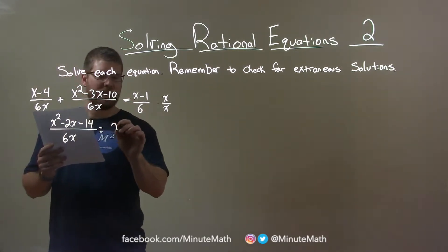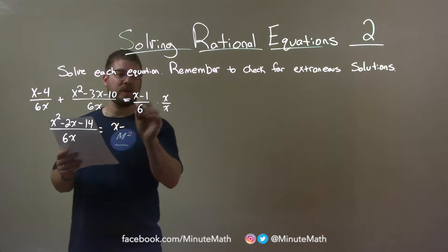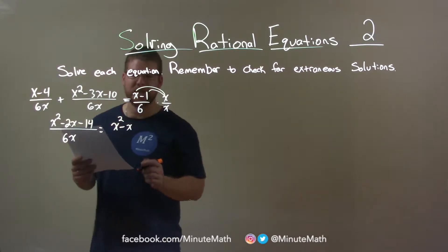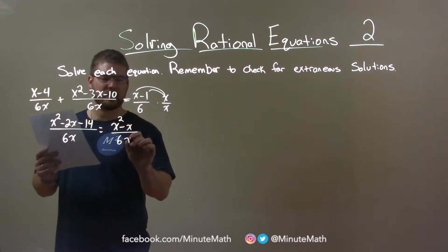Here, we have x minus 1 and actually we're distributing it. So x times x is x squared and x times 1 is an x. x squared minus x. All over 6 times x, 6x.